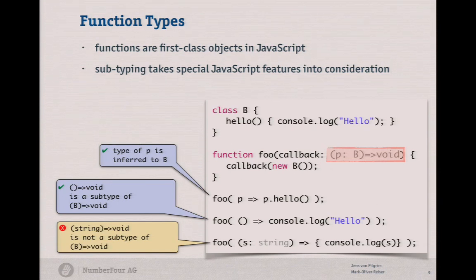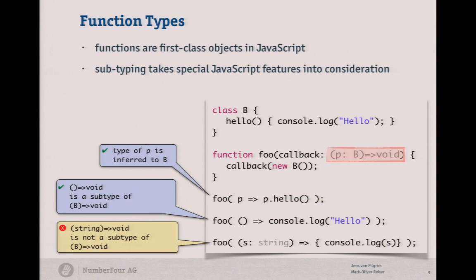You don't need the name of the parameter in the type expression — that's just to simplify things. And here we have the contravariance of parameters. We will see this later on.